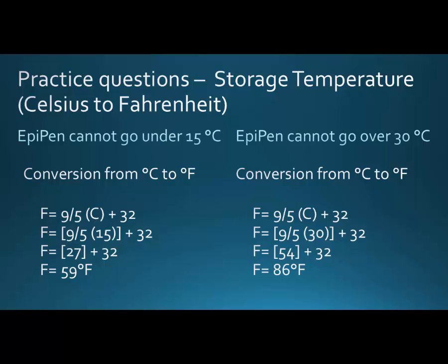We'll convert those Celsius extremes to Fahrenheit. EpiPen can't go under 15°C: using brackets, 9/5 times 15 makes 27, plus 32 is 59°F. It can't go over 30°C: 9/5 times 30 makes 54, plus 32 is 86°F. So the range is 59 to 86 degrees Fahrenheit. We can clearly see that putting it in the refrigerator or leaving it in a hot car in summer falls outside this range.